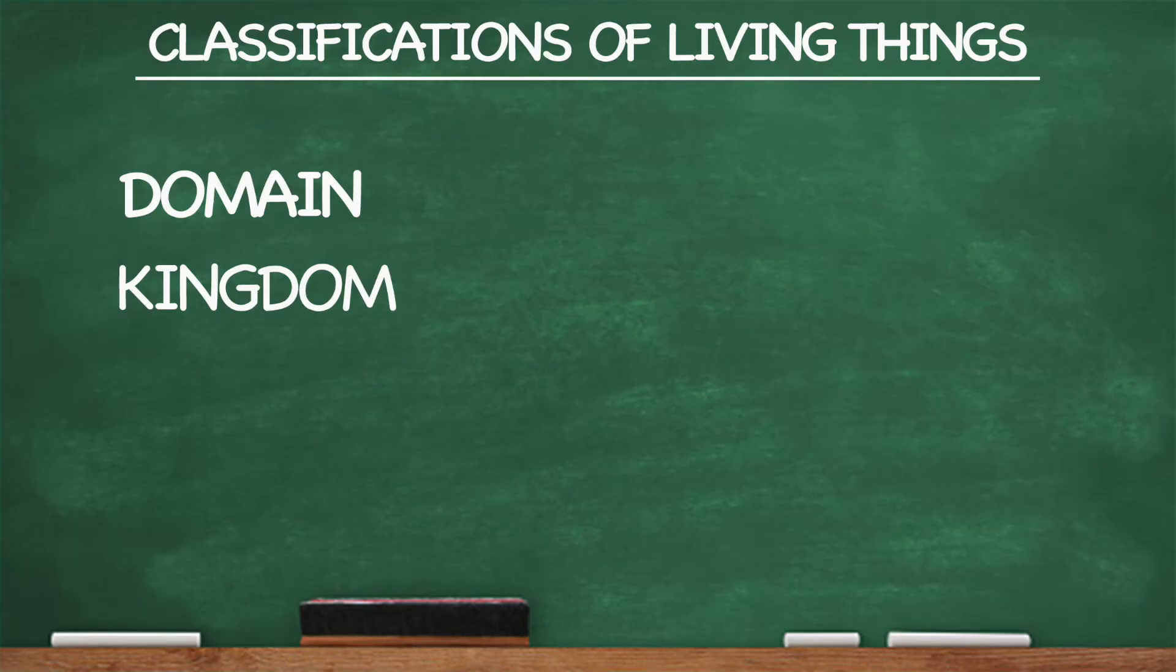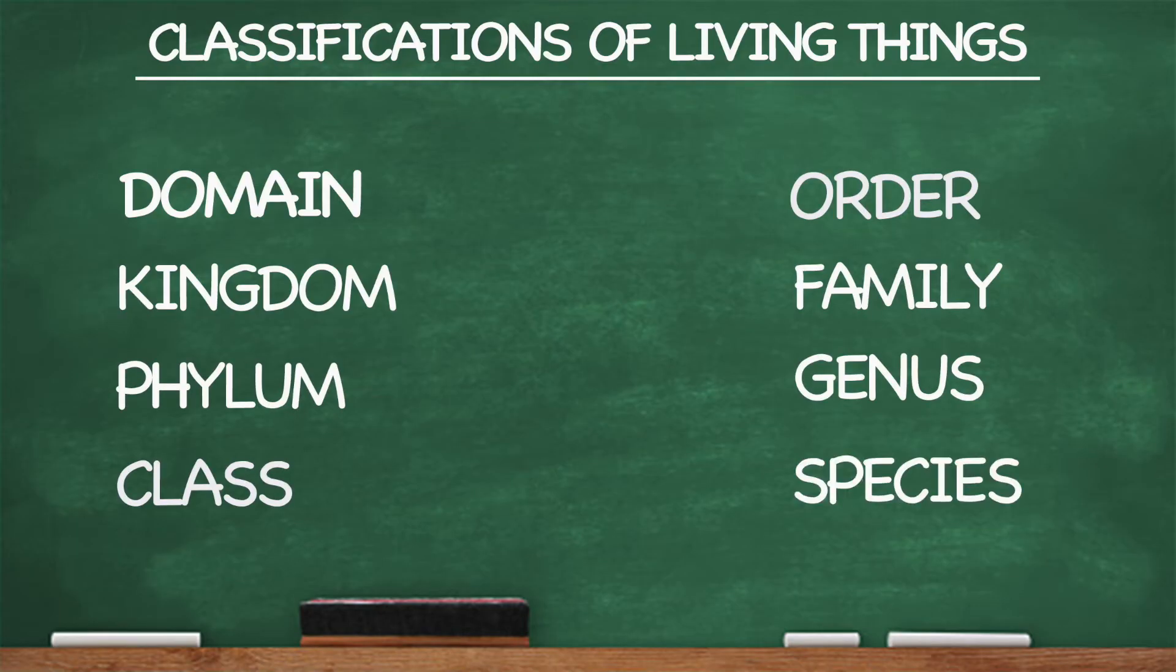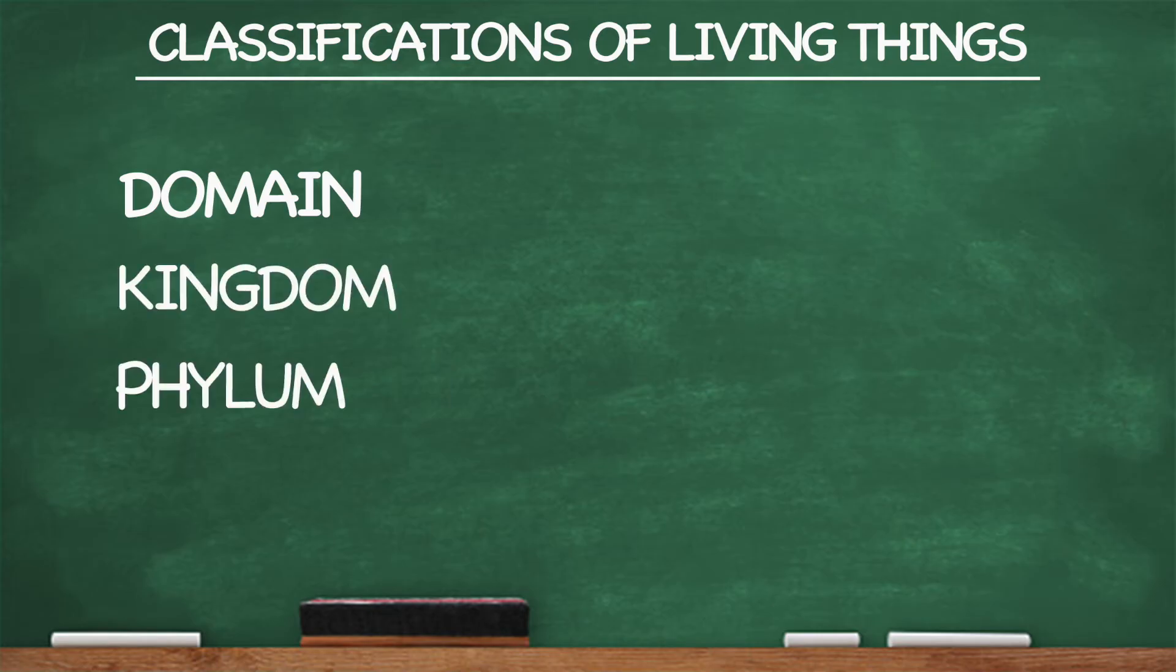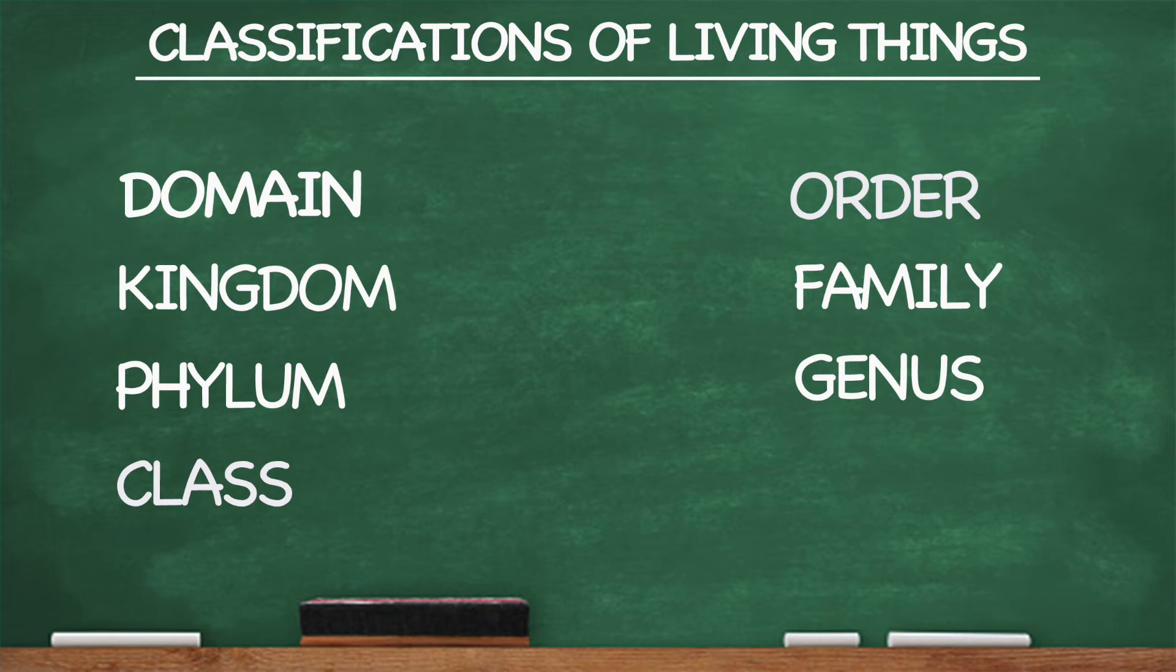Domain, kingdom, phylum, and class. Order, family, genus, and species. Domain, kingdom, phylum, and class. Order, family, genus, and species.